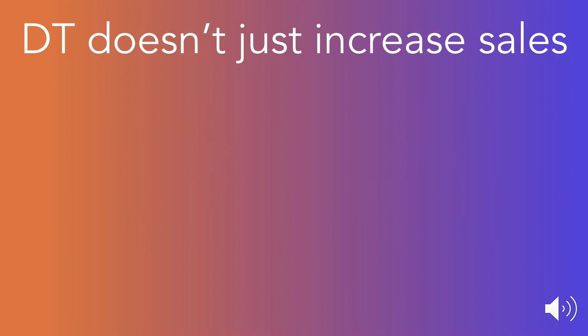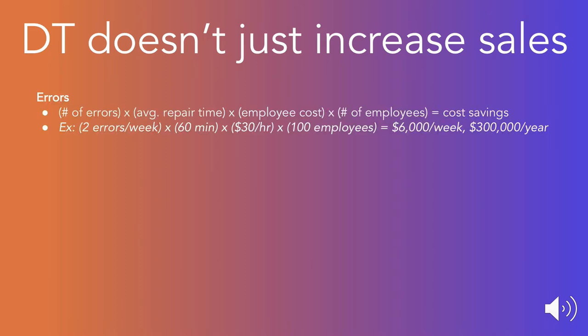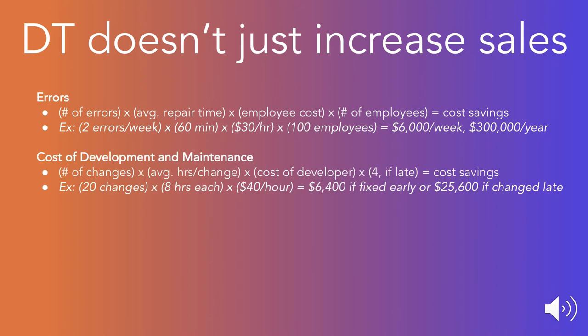When things are designed right the first time — when we fail fast and employ design thinking to build the right thing from the start — we save a lot of money. Think of errors as bugs or defects in an application. We have to ask a developer to fix them. If we factor in realistic data about what developers make and how many are tasked with fixing errors, that could be about $300,000 a year spent just on fixing errors. Design thinking and the fail-fast mentality reduce the number of errors in our application.